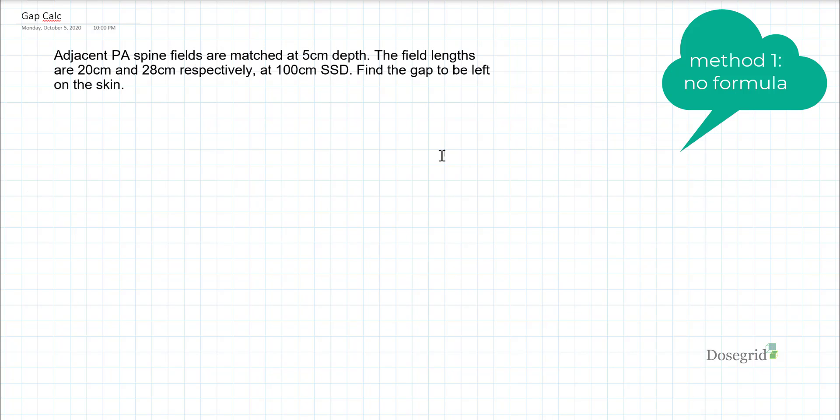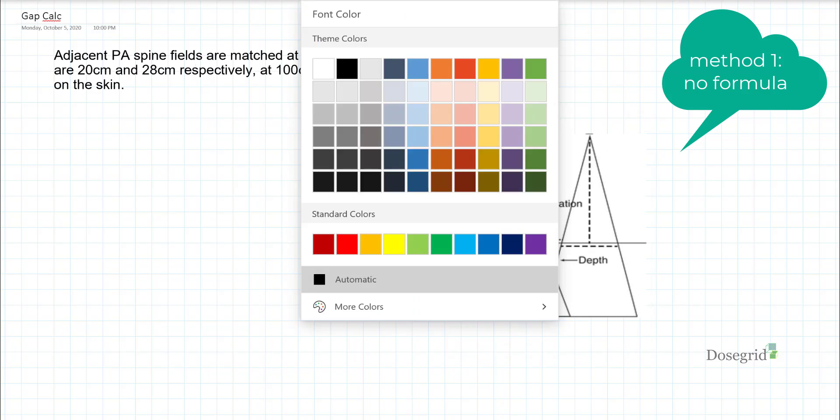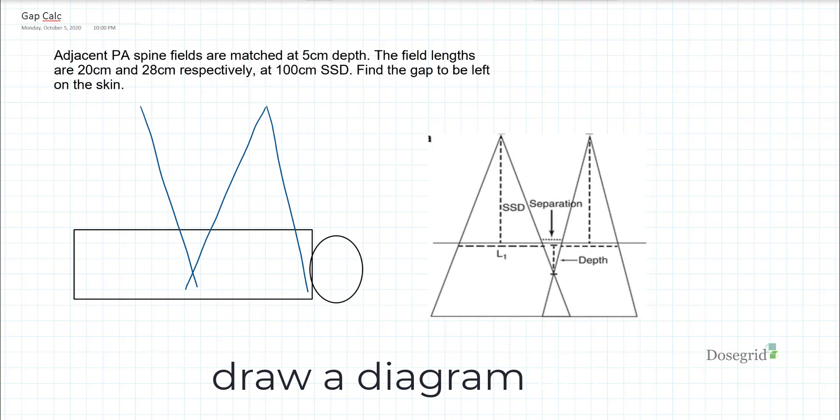The first method uses no formula, only simple geometry. First, draw a diagram of the setup. The SUP PA field is 20 cm long, the INF is 28 cm long. Both are at 100 SSD and the prescribed depth is 5.